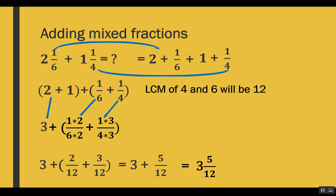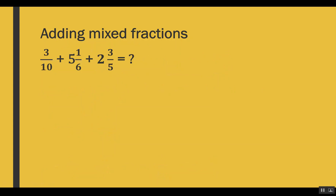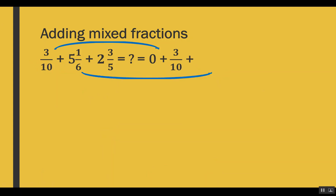Let's see another example — this time we are working on 3 mixed fractions. We'll again make a group of whole numbers and a group of proper fractions. For 3 out of 10, the whole number is 0 and the fraction is 3 out of 10. Next, we get 5 plus 1 out of 6. For the last mixed fraction, the whole number is 2 and the proper fraction is 3 out of 5, so we write 2 plus 3 out of 5.